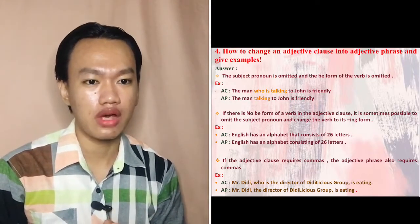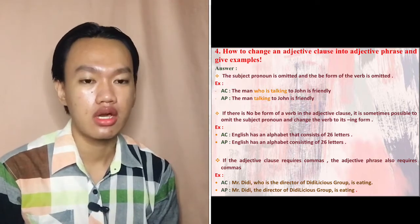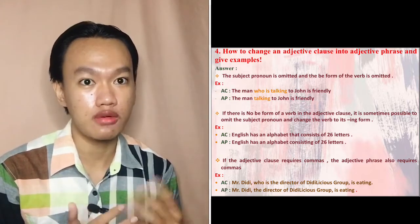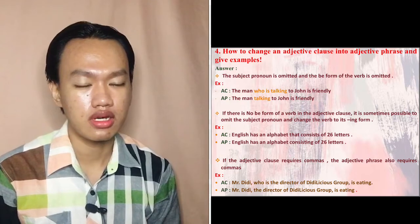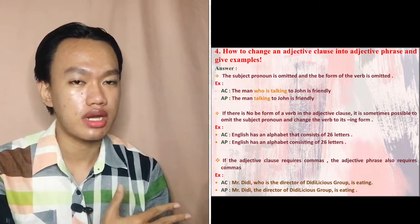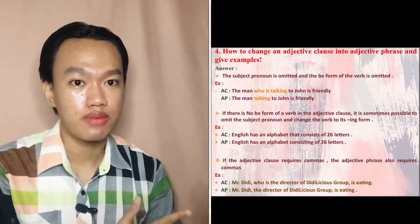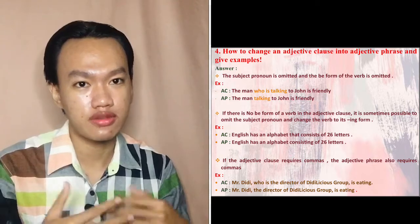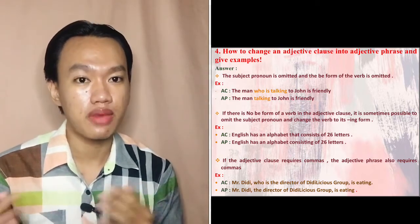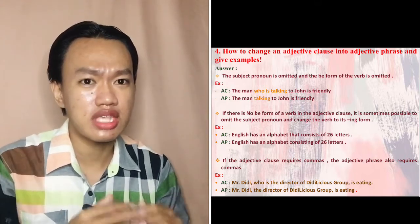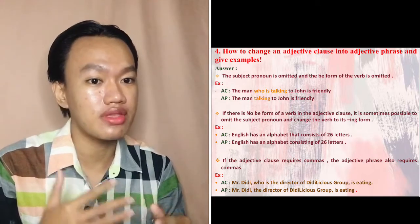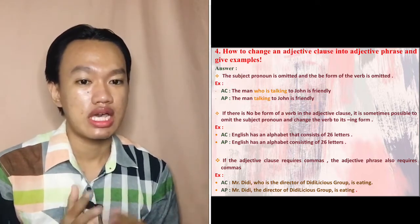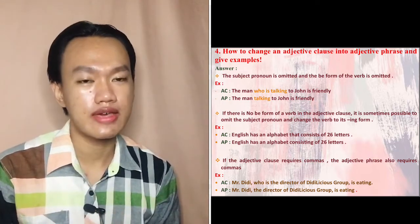The last question is: how to change an adjective clause into an adjective phrase — give examples. First rule: the subject pronoun is omitted and the be-form of the verb is omitted. Example — adjective clause: 'The man who is talking to John is friendly.' Adjective phrase: 'The man talking to John is friendly.' The subject pronoun and be-form of the verb are omitted.